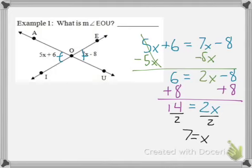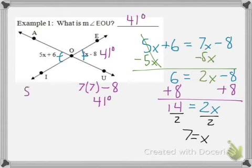But of course we're not done. We're looking for the measure of angle EOU. Plugging this number x equals 7 into the expression, 7 times 7 minus 8 is 49 minus 8 would be 41 degrees. So the measure of angle EOU is 41 degrees. We could check with the other side. 5 times 7 plus 6 that's 35 plus 6 would also be 41 degrees. So we have pretty good verification that we got the right answer.